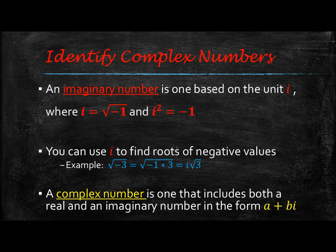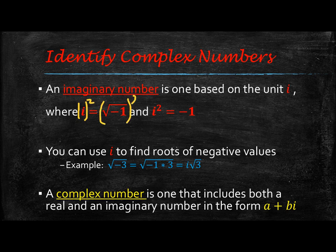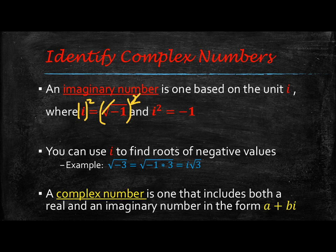The square root of a negative is not a real number; it's called an imaginary number. So i is equal to the square root of negative 1, and i squared is equal to negative 1, because if you take i and square it, that's taking the square root of negative 1 and squaring it. A square root and an exponent of 2 are inverses of each other, so when you square i, you just get negative 1. You're going to have to use this because we're going to do some mathematical operations with imaginary numbers.